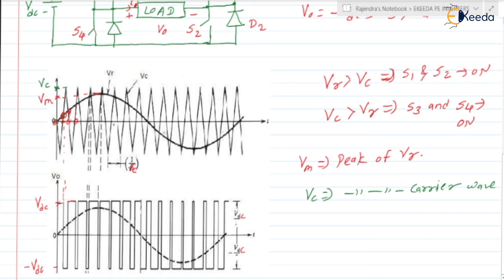In real life, the frequency will be very high, so these pulses will be very close. For the sinusoidal, the initial value will be zero. As we are moving towards the peak value, the width of the minus VDC pulse is decreasing whereas the width of the plus VDC pulse is increasing, so the average goes in the positive direction.